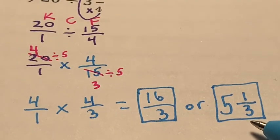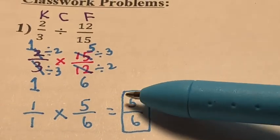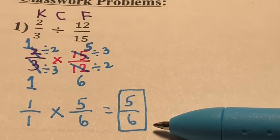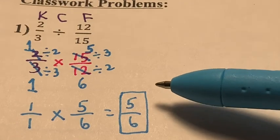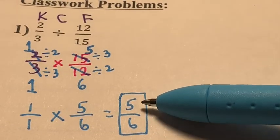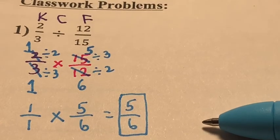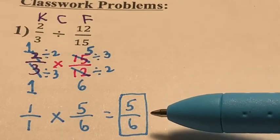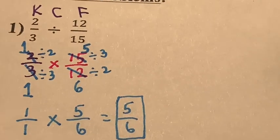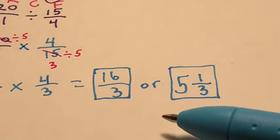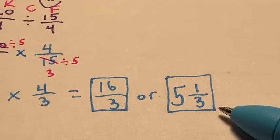If it's a proper fraction that can be simplified, simplify it. If it's a proper fraction that cannot be simplified, leave it as is. If it's an improper fraction, give me the improper fraction and the mixed number. For example, if the answer was 3 over 6, simplify to 1 half. If it was 4 over 6, divide by 2 to get 2 thirds.